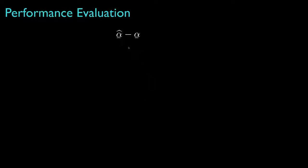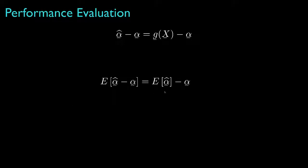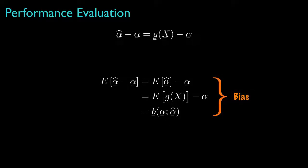To evaluate the performance of the estimator, we'll focus our attention on the estimation error, defined as the difference between the value of our estimate and the value of our parameter. By using the functional form for the estimator, we see that this is a function of the random observation x. One statistical measure of this error is its expected value, which, because the parameter is deterministic, involves only the expected value of the estimate. Once we take this expectation, we will in general have a function of the parameter alpha, which depends on the specific form of the estimator alpha-hat. We'll refer to this expected value of the error as the bias for the estimator.